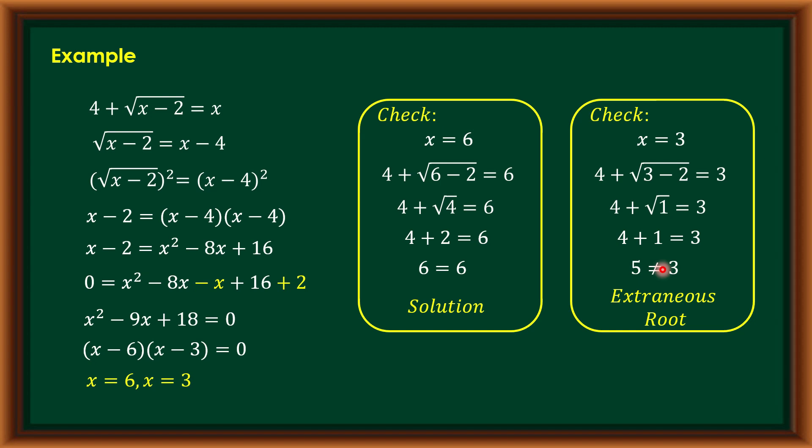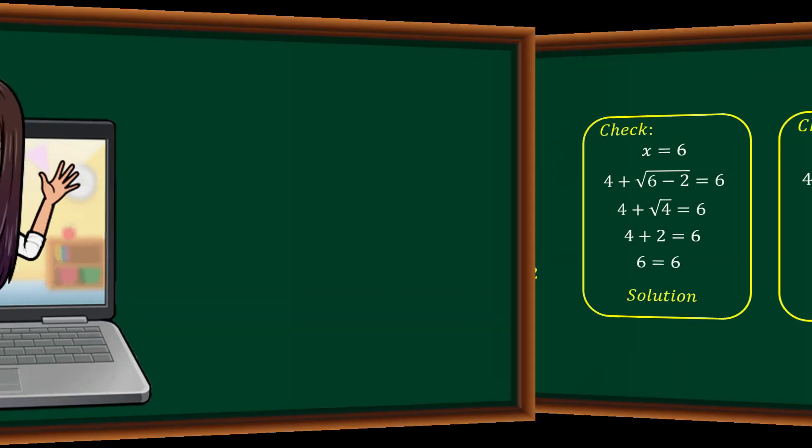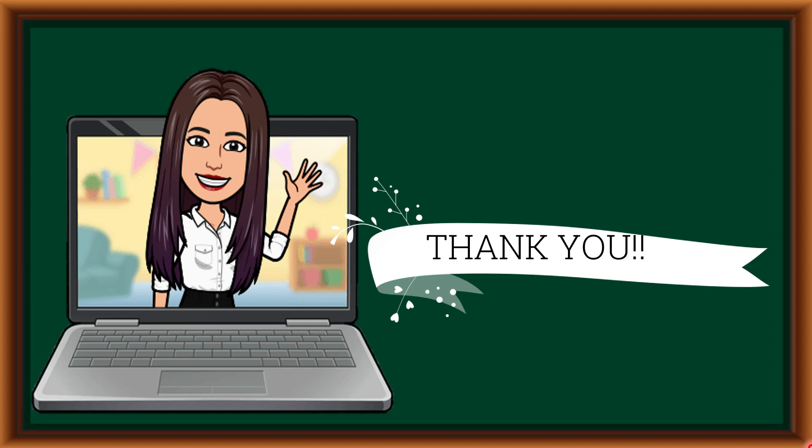That is how we solve radical equations. To summarize: arrange the terms so one radical is isolated on one side; square both sides; combine like terms; solve for the variable; and check apparent solutions in the original equation. If a solution does not satisfy the original equation, it is called an extraneous root. Thank you for watching — see you again in my next video!